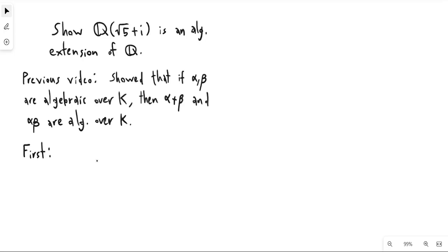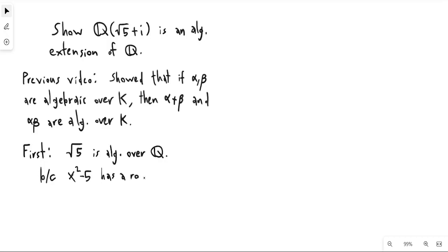So first, we can use what we did in the last video. Square root of 5 is algebraic over Q — this is not hard to show. This is because the minimal polynomial of square root of 5 is x squared minus 5, which has square root of 5 as a root. And this is really all you need to do to show that something is algebraic: you just have to find a polynomial that it is a root of.